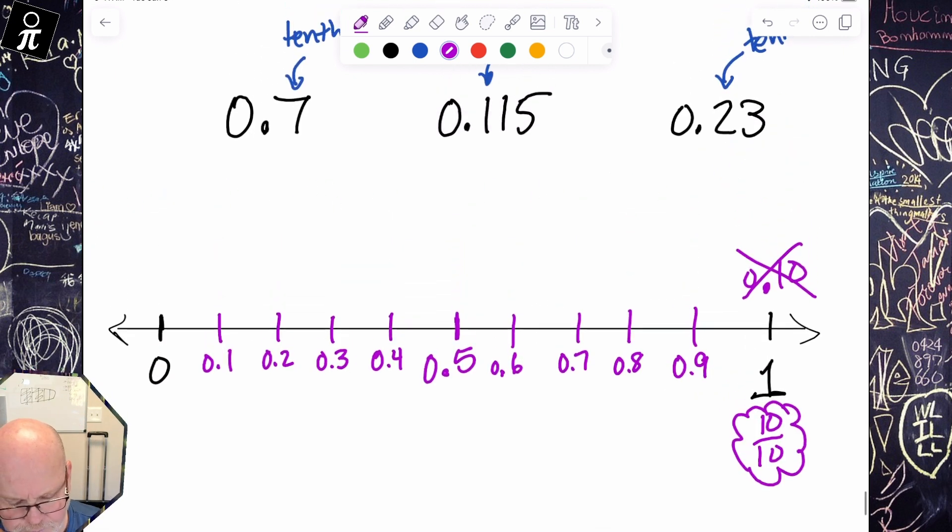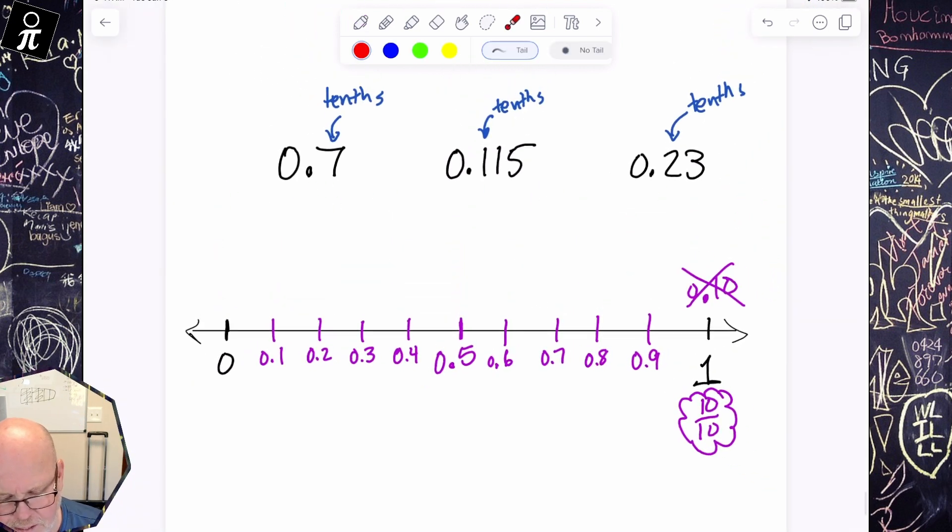So where does this 0.7 live? Well, it means we're going to move over seven tenths. And when we move over seven tenths, we can see that it lives right there. So that is where 0.7 lives, 0 and seven tenths.